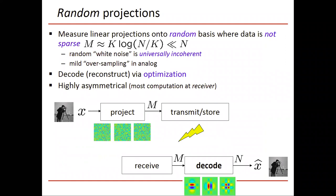In these random noise basis vectors, the data is not sparse at all. Nonetheless, we have m of those, m measurements, where m is proportional to k log n over k, and that number is much less than n.